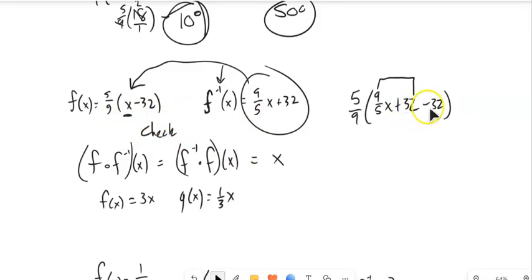And now if I simplify this, 32 minus 32 is 0. So I have 5 ninths times 9 fifths. Well, that's a 1, that's a 1. That's an x. So it works that direction.